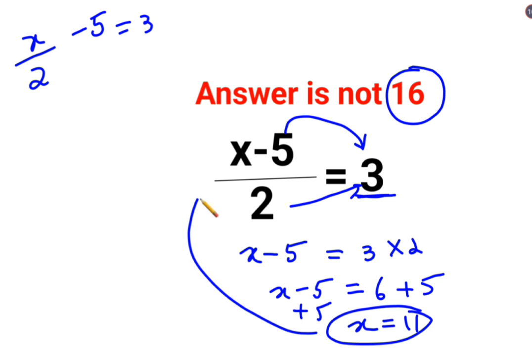Let's put it back in the original question. So we have 11 minus 5 upon 2. So 11 minus 5 is 6. 6 upon 2 is 3.